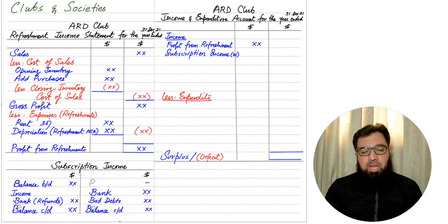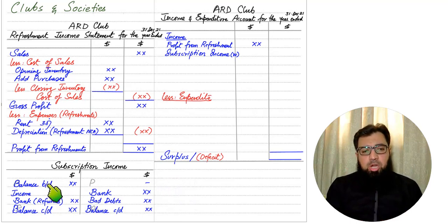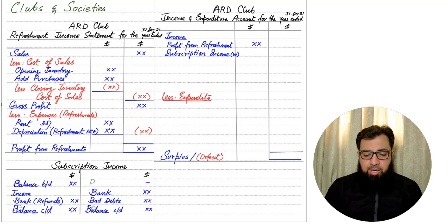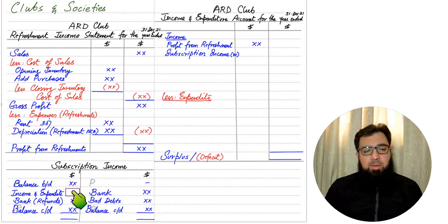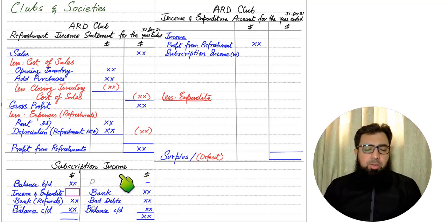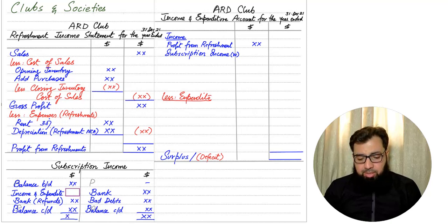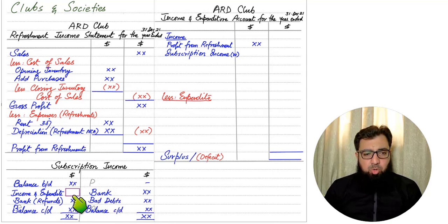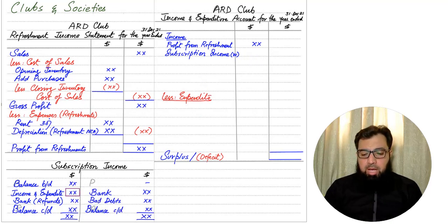Since subscription is income and income is naturally credited, at the end of the year we need to debit the subscription account to close it and transfer the balance to the income and expenditure account. To calculate the income and expenditure value, the greater side will be the credit side — we write the greater side total on both sides and deduct all other items to arrive at the income and expenditure figure, which is then brought into the income and expenditure account.